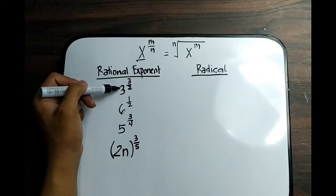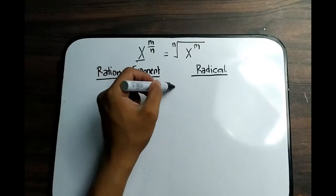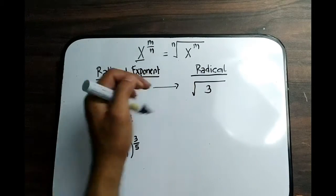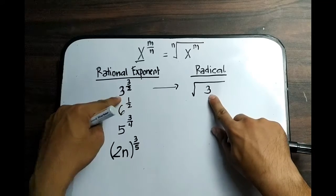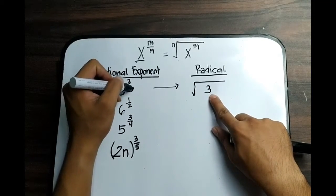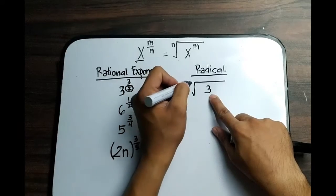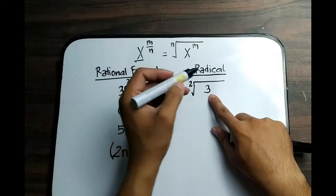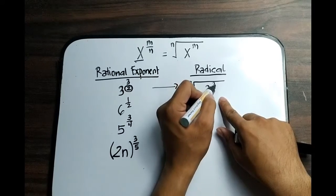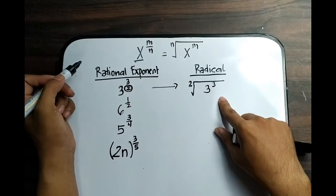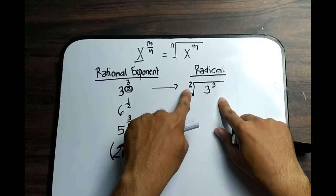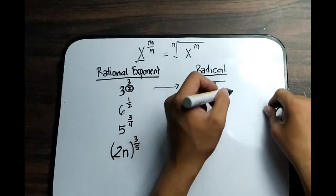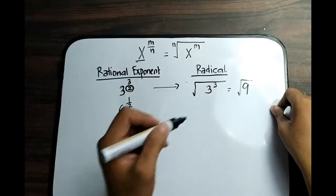In number 1, we have 3 raised to 3 over 2. Create your radical symbol and put the radicand 3 inside. The denominator of your exponent is 2, so the index is 2. The numerator 3 becomes the exponent of the radicand. Since the index 2 makes it a square root, we make the 2 invisible and simplify it as the square root of 9.